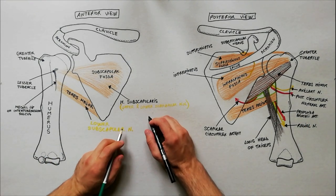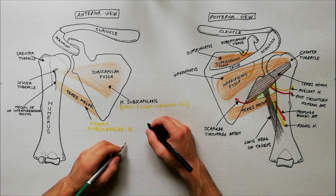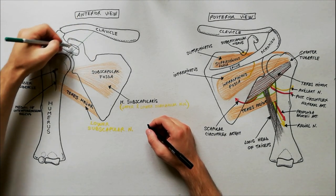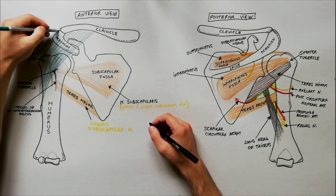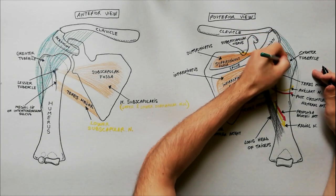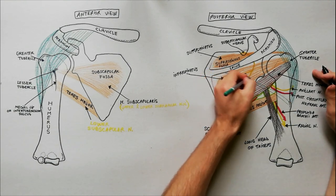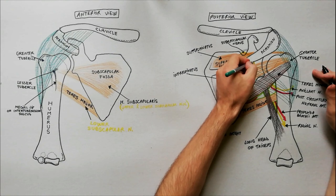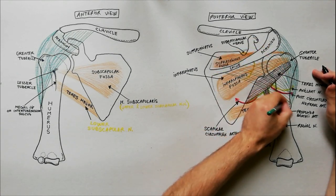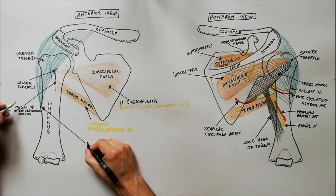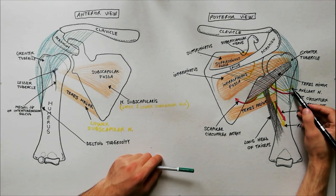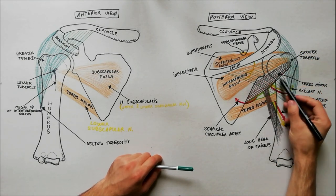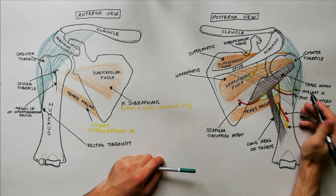To conclude this video we will draw the deltoid muscle using the green color. This muscle has three parts. Its anterior part originates from the anterior border of the lateral third of the clavicle. Its lateral part originates from the acromion. And its posterior part originates from the lower lip of the spine of scapula and covers most of the structures already indicated. All three parts of the deltoid muscle converge into a strong tendon which inserts into the deltoid tuberosity of humerus. Both deltoid and teres minor muscles are supplied by the axillary nerve.